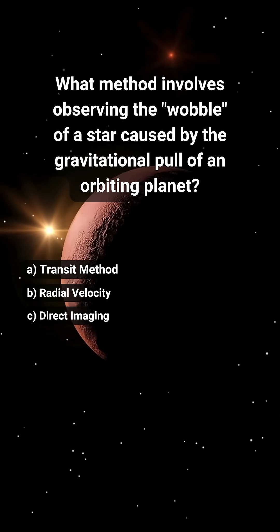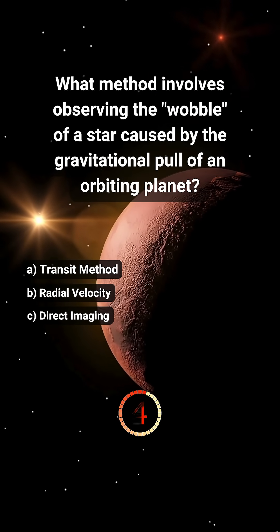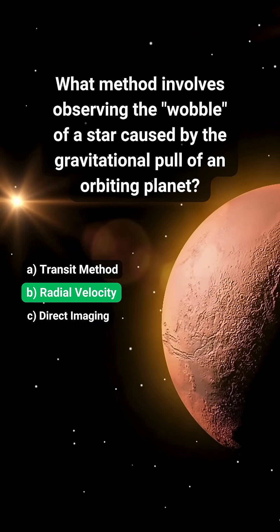What method involves observing the wobble of a star caused by the gravitational pull of an orbiting planet? B. Radial Velocity.